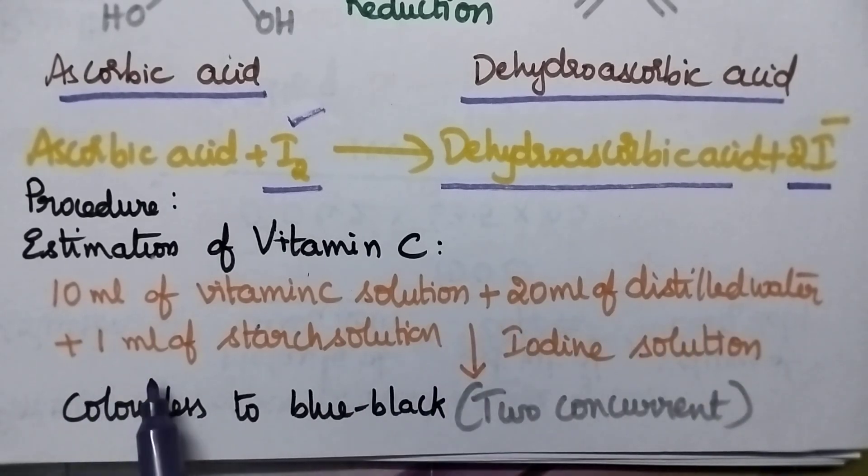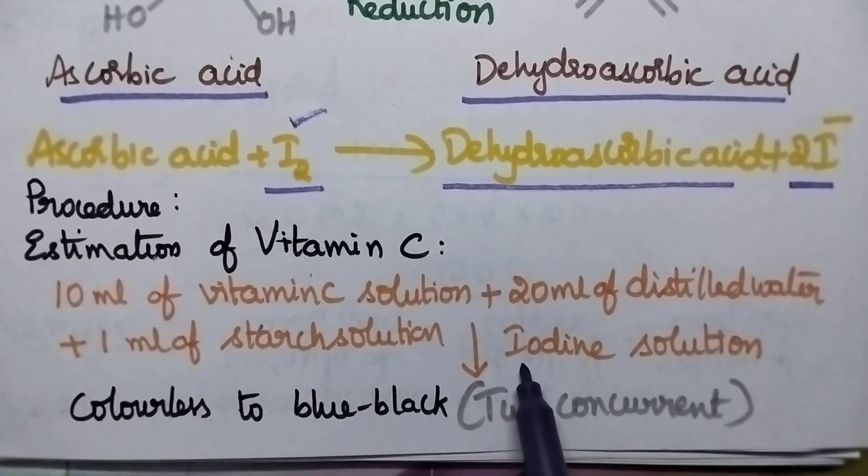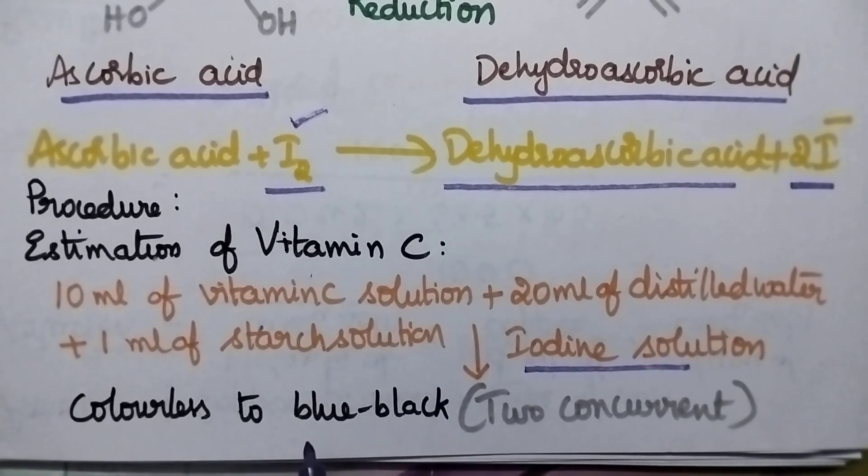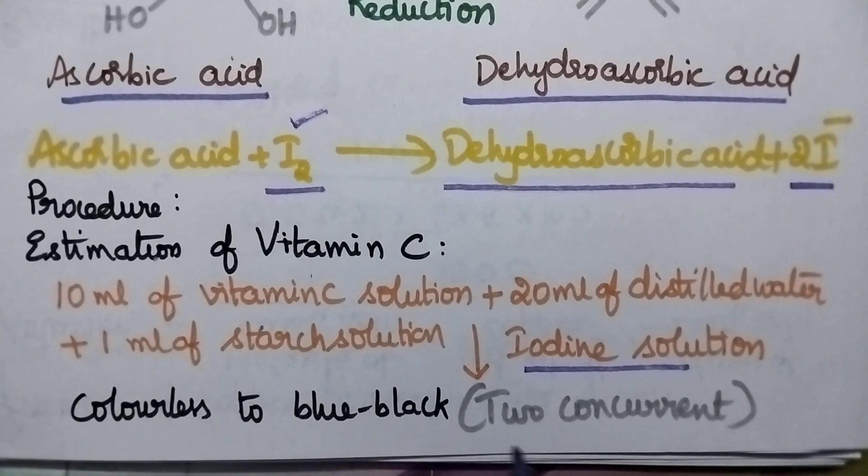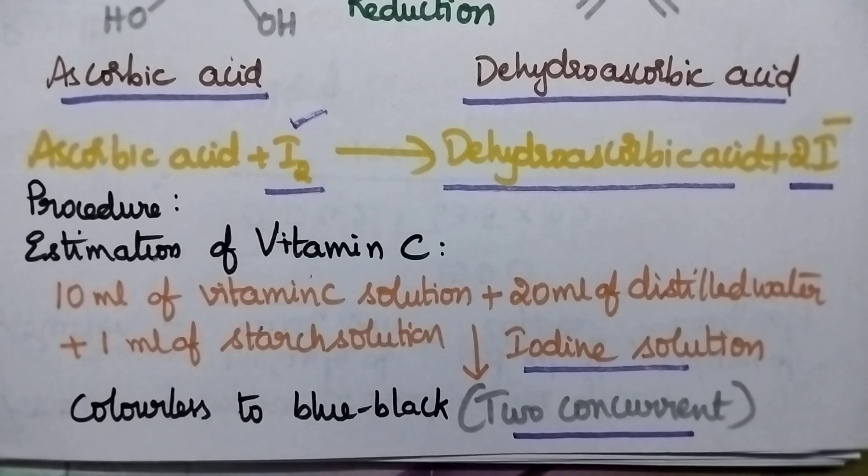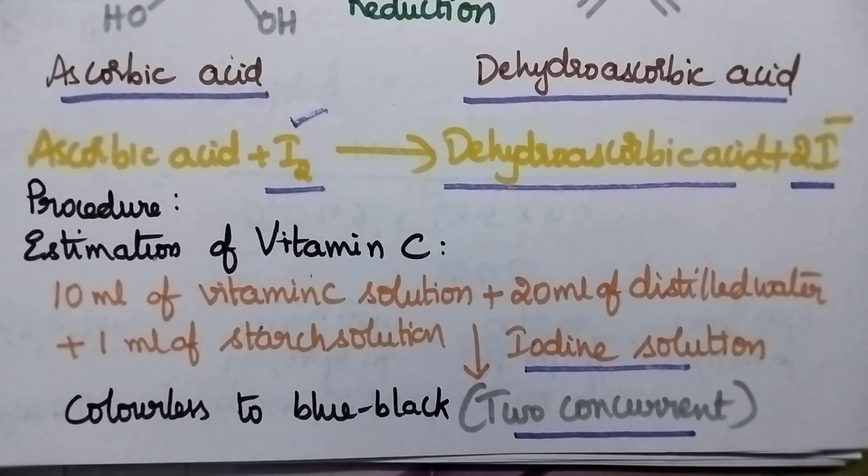1 ml of starch solution is added and the solution is titrated against iodine solution until the colorless solution turns into blue-black color. The titration is repeated to obtain two concurrent readings.